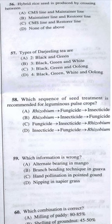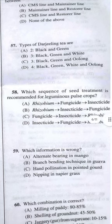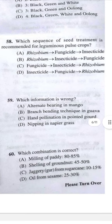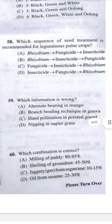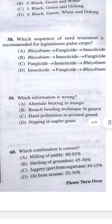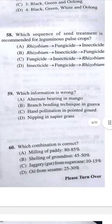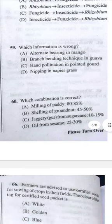Question 58: Which sequence of seed treatment is recommended for leguminous pulse crops? Answer F — the sequence is fungicide, insecticide, and rhizobium bio-inoculant.